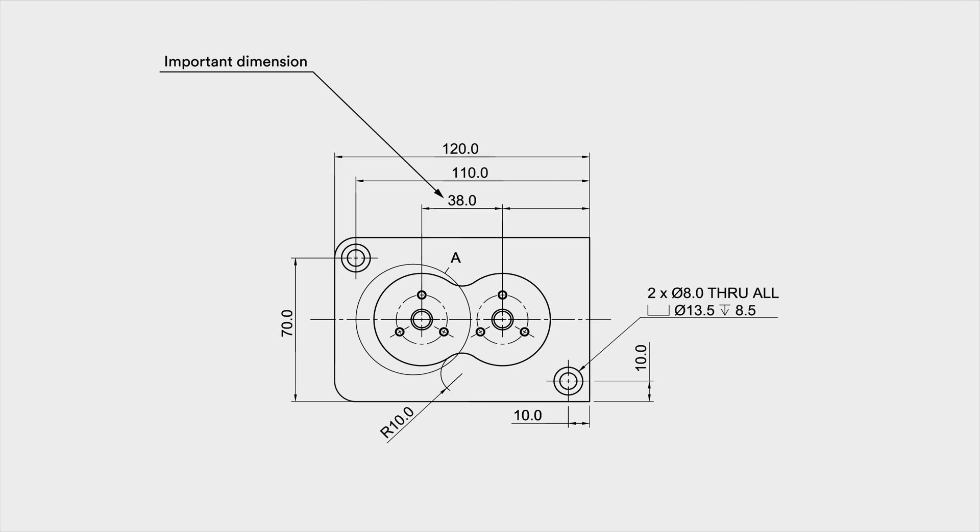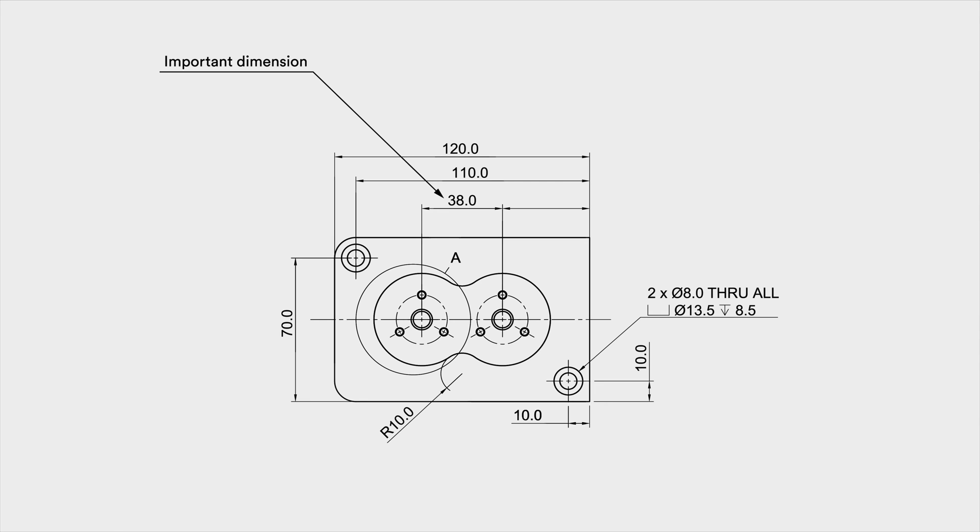Now we can dive deeper into the specifics of adding dimensions, tolerances, and annotations in your technical drawing. When including both a 3D CAD file and a technical drawing in your order, the manufacturer will primarily check the dimensions of the technical drawing. Therefore, we recommend that you dimension all important features on your drawings thoroughly. Start by placing the overall dimensions of the part. Second, add the dimensions that are most critical for functional purposes — for example, the distance between the two holes in the example drawing is vital.